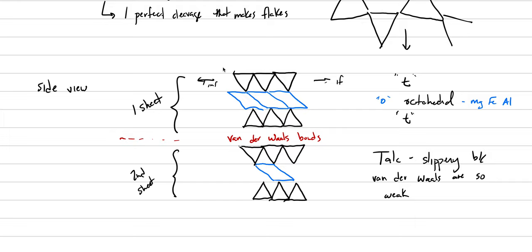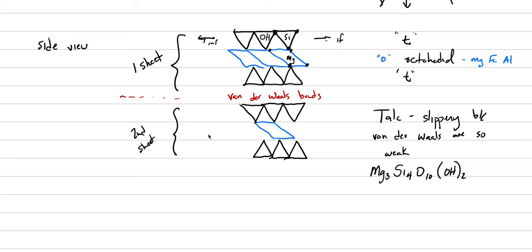And what we could say about talc is that it feels slippery because the van der Waals are so weak. The chemical formula for talc is Mg3Si4O10(OH)2. And so if you were to think about where all those things are going, our oxygens are sitting on the corners of the tetrahedrons and at the corners of our octahedrons. Our magnesiums are hanging out here, and our silicas are hanging out here, and the OHs are back in there. And so that's the structure of talc and the simplest of all the phyllosilicates.